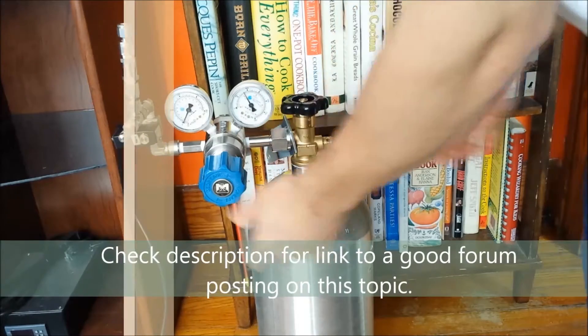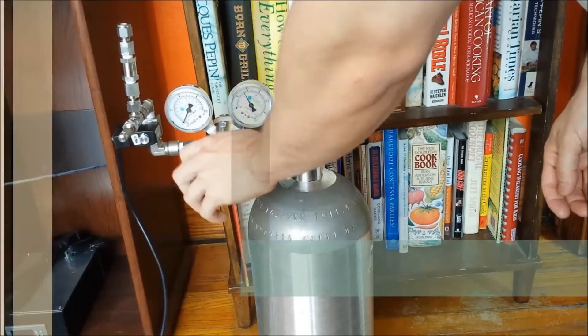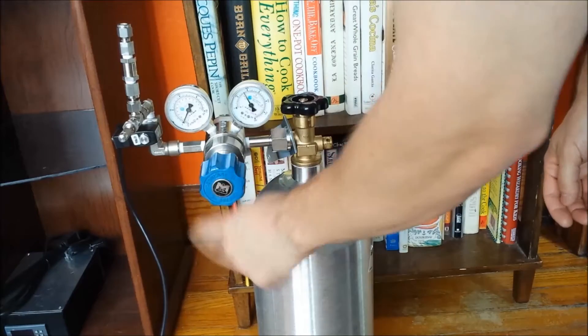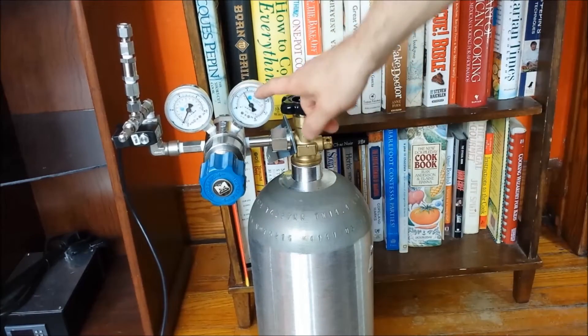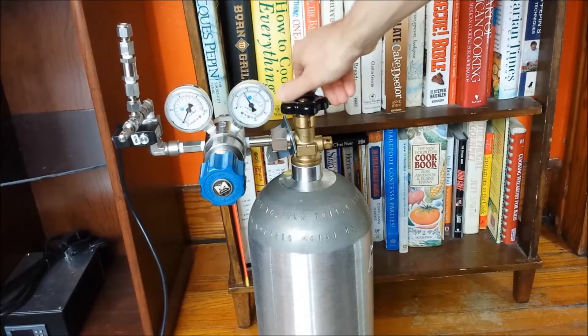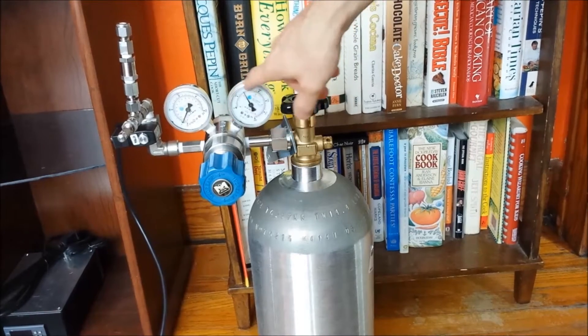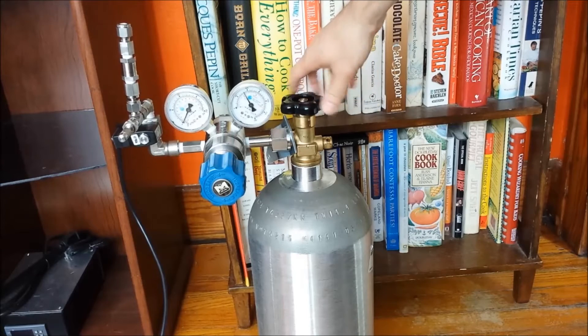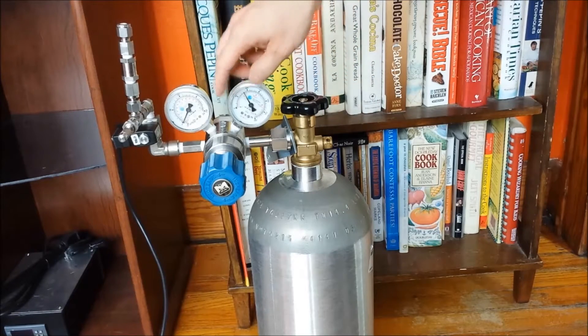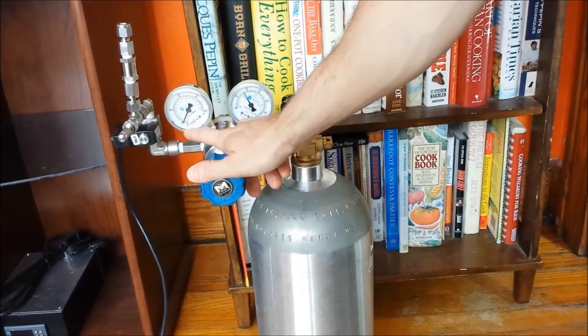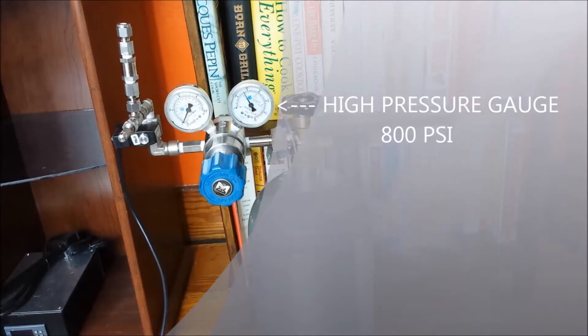So first thing is you're going to connect the regulator to your CO2 cylinder. Then you're going to turn the regulator handle completely loose all the way counterclockwise. Then what you'll do is you'll turn on the CO2 tank handle slowly and let CO2 inject into the regulator and you'll see the high pressure gauge max out at about 800 psi.